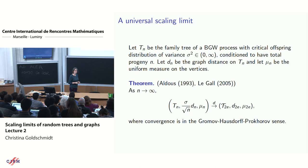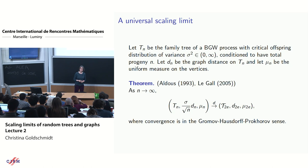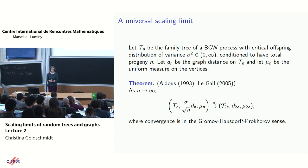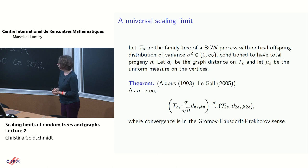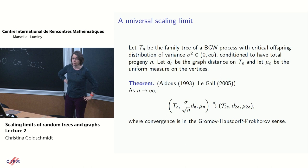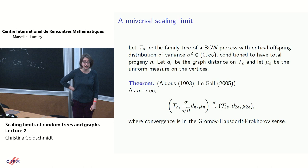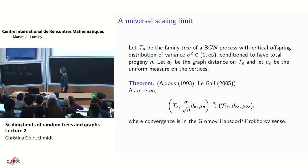We were thinking about the family tree of a BGW tree conditioned to have total progeny n — so n vertices — thinking of it as a rooted ordered tree using graph distance as the metric on the vertex set, and the uniform measure mu_n on the tree. The theorem says that if you rescale distances by roughly one over square root of n — with a factor of sigma to account for the standard deviation of the offspring distribution — we get convergence in distribution to the Brownian continuum random tree in the sense of the Gromov–Hausdorff–Prokhorov distance.